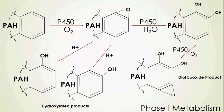The overall goal of metabolism is to increase the water solubility of a compound so that it can be excreted from an organism. PAHs are metabolized in various tissues, but mainly in the liver, using specific enzymes called P450 mixed function oxygenases. What happens is that the ring structure becomes oxidized — this produces an epoxide intermediate, which can then be protonated to form single hydroxylated products, where an OH group is attached to the ring structure. We call these hydroxylated products.